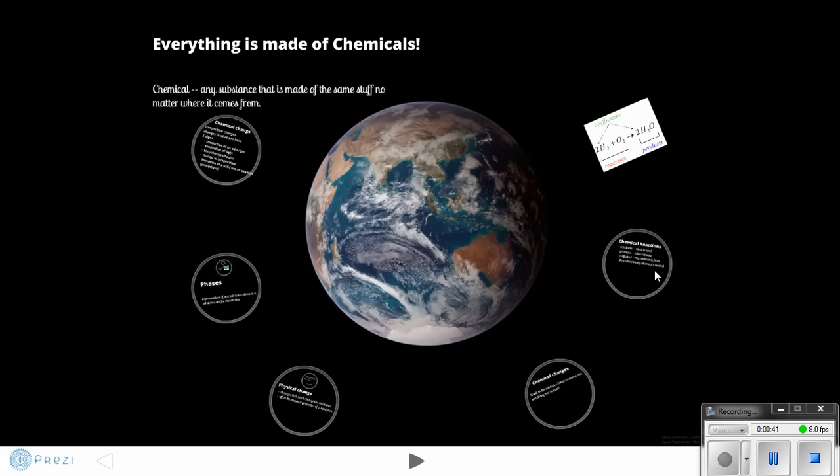Let's talk about chemistry. First off, everything you interact with from the seat you're sitting on to the computer you're watching to the planet you live on is made of chemicals. And a chemical is any substance that is the same no matter where it comes from. Water is water, whether you get it here or you get it in Thailand, it's still water.